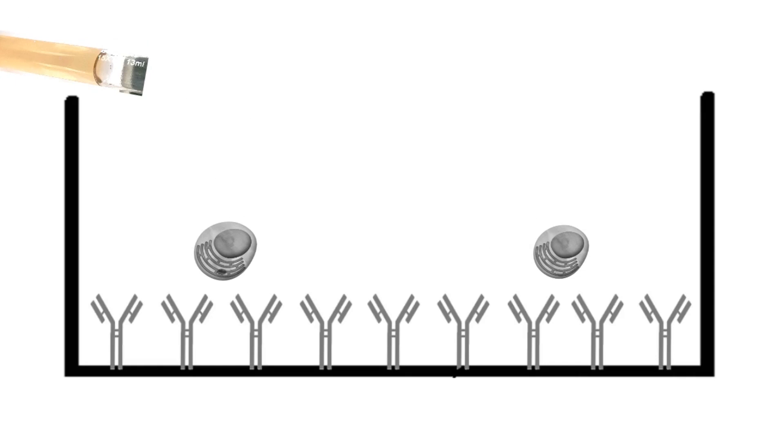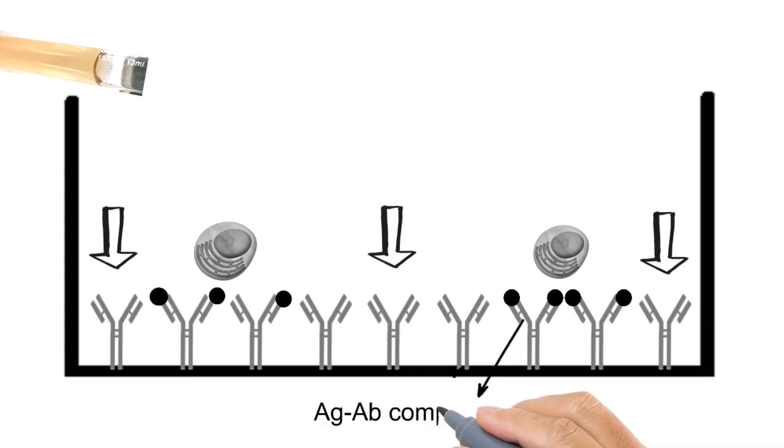When these cells secrete interleukin 2 molecules, they will immediately bind to the antibodies which are present in the close vicinity of these cells. They will not bind to the antibodies which are far away from those cells. In this phase, the antigen-antibody complexes will form at a point where cells were settled.